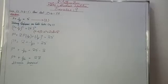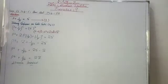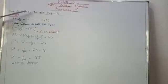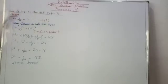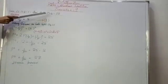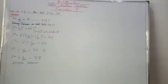Hey students, Assalamu Alaikum, welcome to my channel. Today we will do Exercise 9 of Chapter: Algebraic Identities, Question Number 4. Question Number 4 is: if p + 1/p = 5, then show that p² + 1/p² = 23.